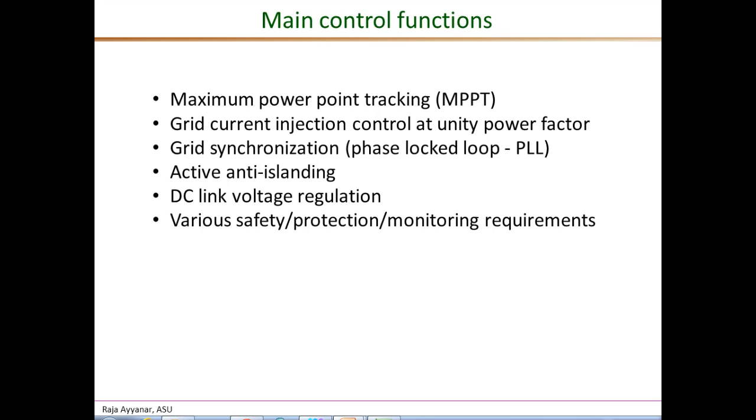It is not trivial to detect an island, especially when the local load matches exactly with the PV generation. We need to have some kind of an active positive feedback based method in order to detect an island. That is the function of this anti-islanding control loop. Internally, we have this DC link voltage which determines the voltage rating of the various power semiconductor devices, and they need to be quite precisely regulated. That is one of the main control loops.